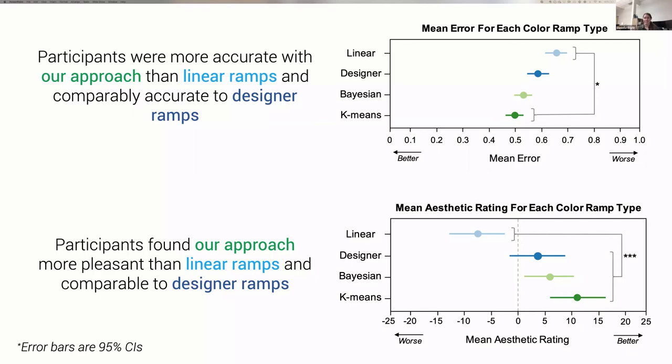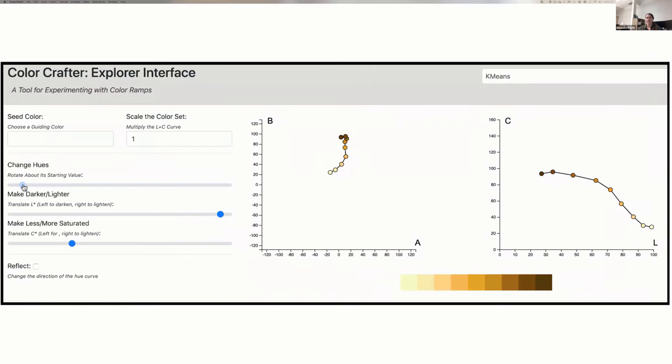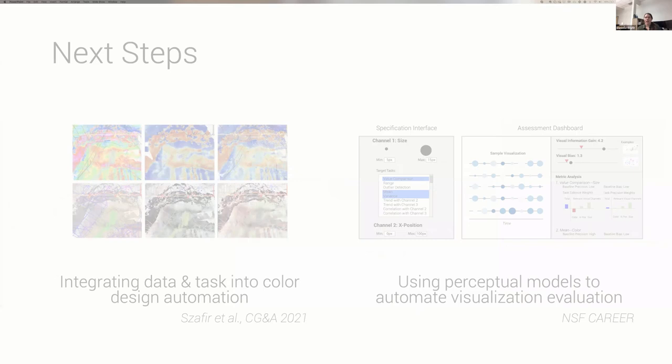We embedded these models in a color encoding design tool called Color Crafter that provides a front end for this algorithm. This tool allows people to manually specify target colors to generate a series of ramps. They can manipulate those ramps by adjusting and applying a sequence of affine transforms: translating, rotating, scaling, and reflecting these curves. These transformation-based edits allow users to really quickly customize their encodings without sacrificing the quality of the resulting ramps.